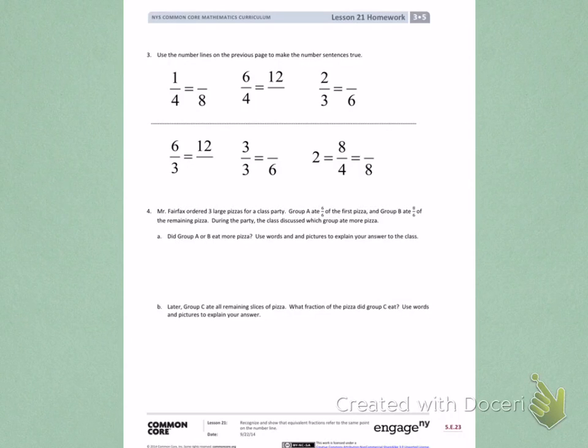Number 3. Use the number lines on the previous page to make the number sentences true. So you're going to have to flip your paper back and forth to look at the number lines to help you make these number sentences true.